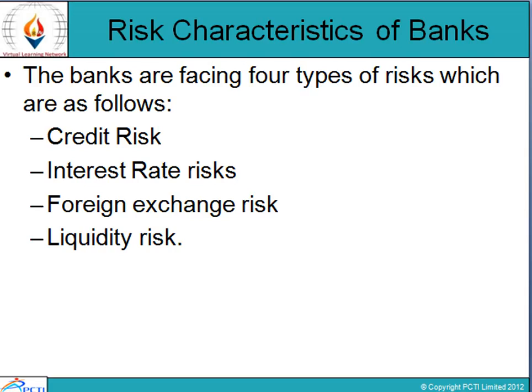There are four types of risk when we talk about banks. Credit risk is basically the risk associated with extending loans and advances, and there is a risk of creditors not returning the loans and advances. Another is interest rate risk — it arises because banks fix the interest rate on their resources and on the assets in which they are employed at different times, which has a significant impact on the net interest income.